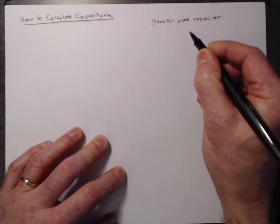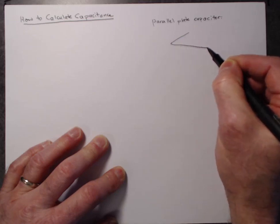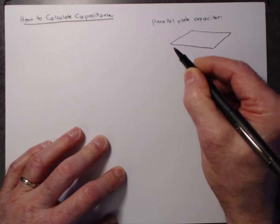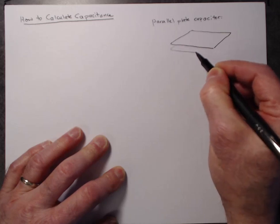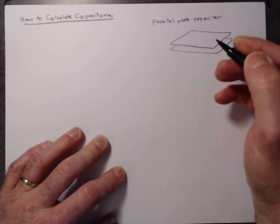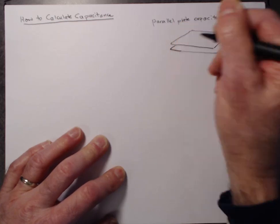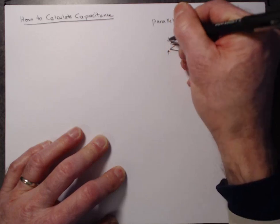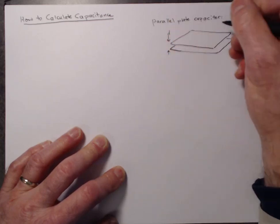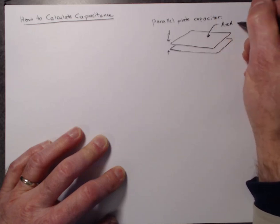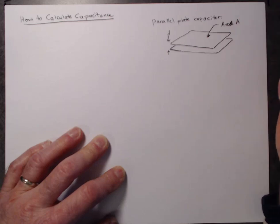So this consists of two thin sheets of metal that are relatively close to each other. In perspective, it looks like this, and the distance between the two sheets is D, and the area of one of the sheets is A, and we're going to assume that the two sheets are identical.